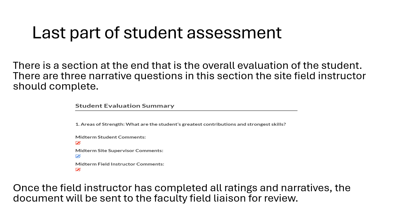Once the instructor has rated all students on their competencies, there is a last narrative portion at the end of the assessment asking the field instructor to identify the student's areas of strength, the areas in which they believe the student still needs to grow and progress, and any other additional information and feedback they wish to provide. The field instructor will then sign the document and submit it, which means it will go to the field faculty liaison.